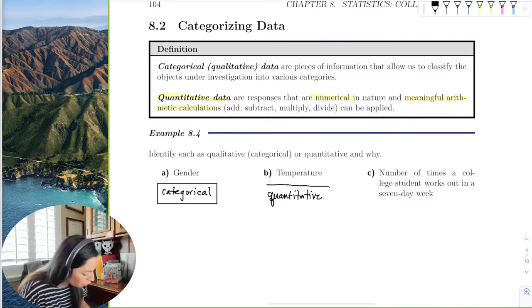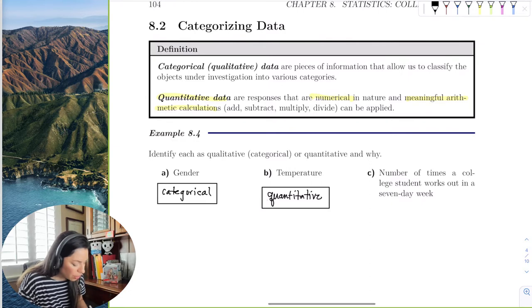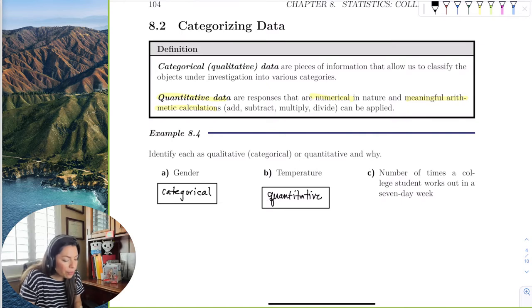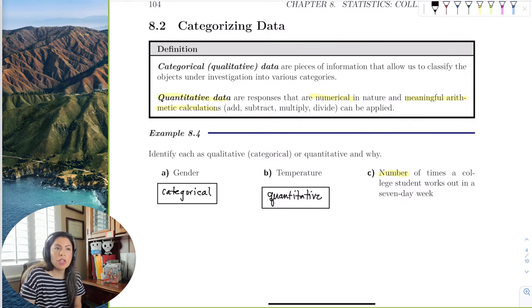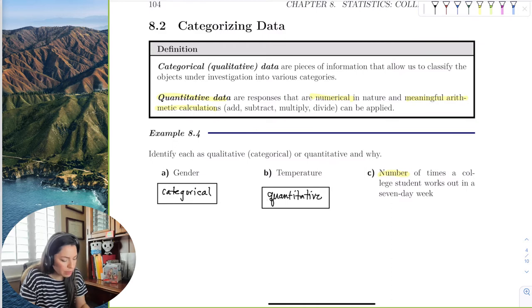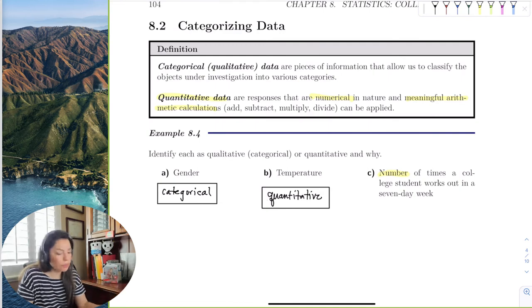And you can see the root word in there is quantity. Okay, the number of times a college student works out in a seven-day week. So the number of times itself, the word number itself tells you that this could be quantitative. And then I would ask, well, can I find the average number of times a college student works out? Yeah. Okay, so it's a number, and I can get meaningful results from those numbers. Then I would say quantitative.